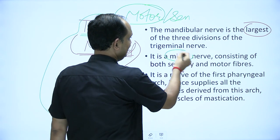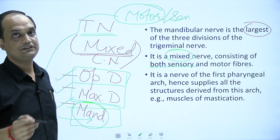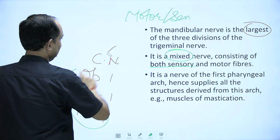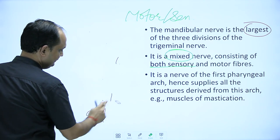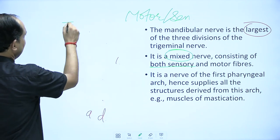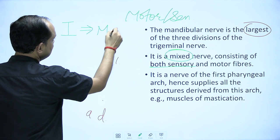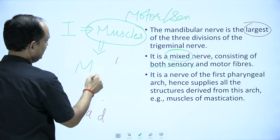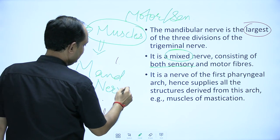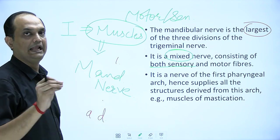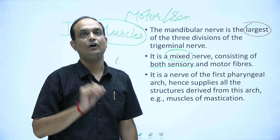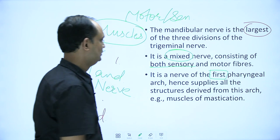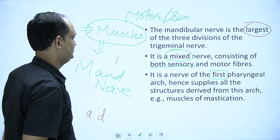The mandibular nerve consists of both sensory and motor fibers. The second important concept is regarding the first pharyngeal arch: all muscles developing from the first pharyngeal arch are supplied by the mandibular nerve. So whenever a muscle receives nerve supply from the mandibular nerve, it automatically becomes a derivative of the first pharyngeal arch. The mandibular nerve supplies all structures of the first pharyngeal arch.